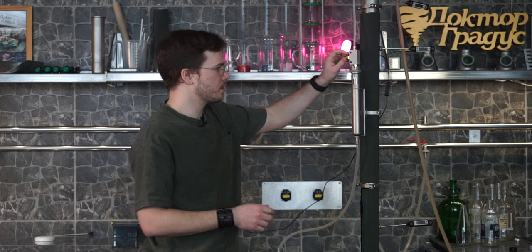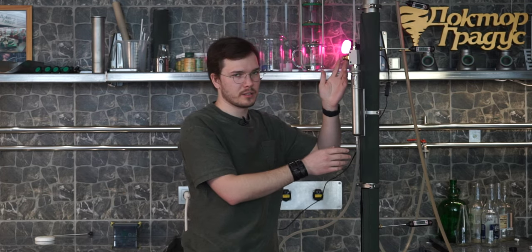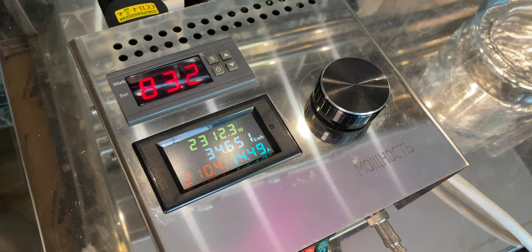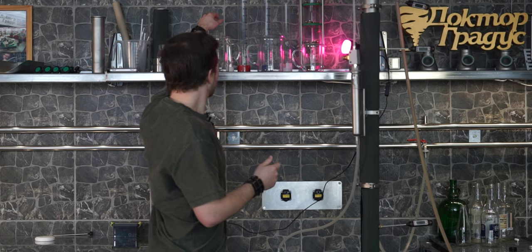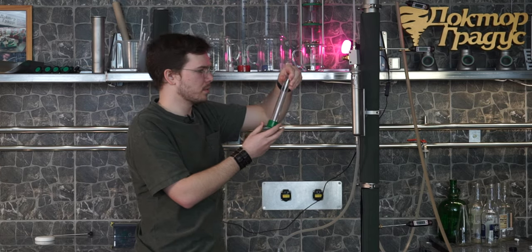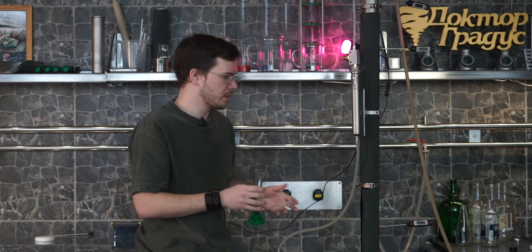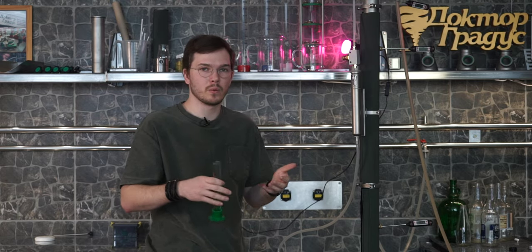So, right now we just need to adjust the speed of collection. We're running on the power of 2300 watts, so it's maximum, and let's just measure how much of liquid we're collecting by the small cylinder. I think we go with a 50 ml cylinder and check how much of liquid we have per hour.